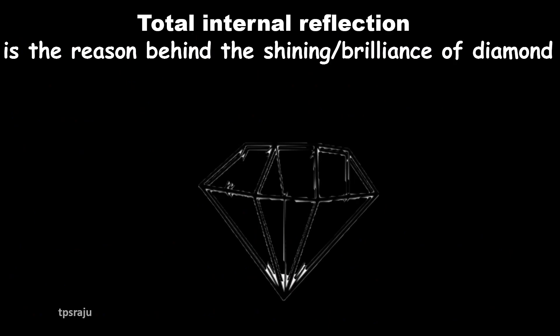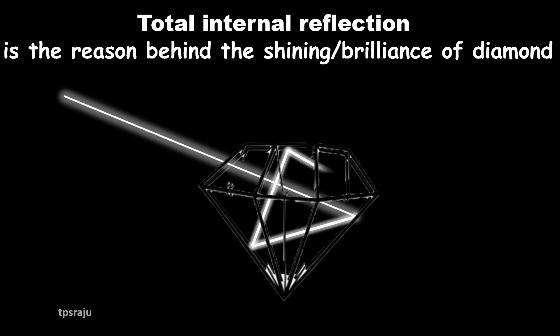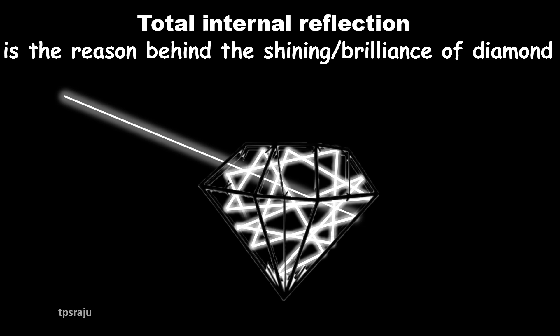Now we are going to understand the reason for brilliance of diamond. The critical angle of diamond is very low, that is 24.4 degrees. So if a light ray enters a diamond it is very likely to undergo total internal reflection, which makes the diamond shine.